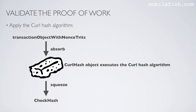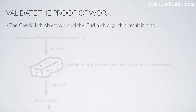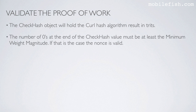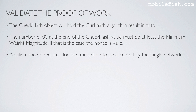Here you can see how the curl hash algorithm is applied. The curl hash object executes the curl hash algorithm using the transaction object with nonce trits as input and outputs the hash value into the check hash object. The check hash object holds the curl hash algorithm result in trits. The number of zeros at the end of the check hash value must be at least the minimum weight magnitude. If that is the case, the nonce is valid. A valid nonce is required for the transaction to be accepted by the tangle network.